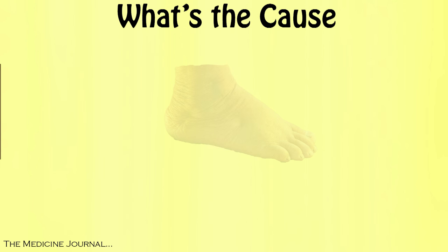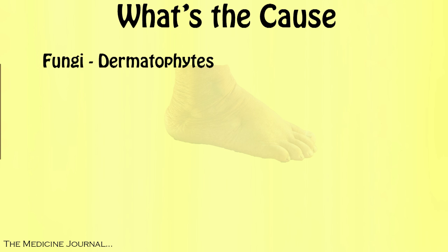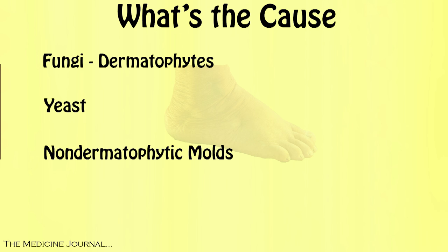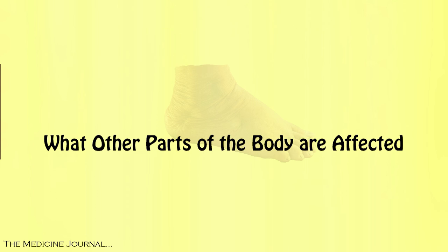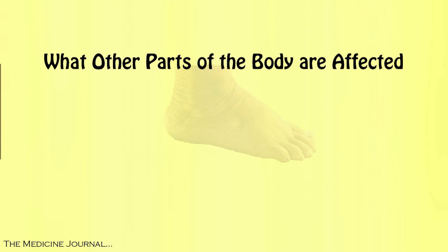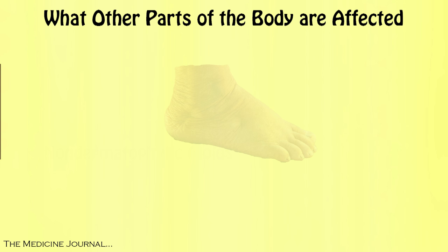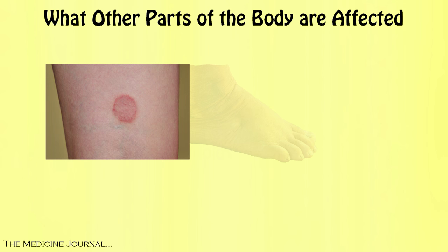There can be several causes of your imperfect nails. The most common is a class of fungi known as dermatophytes. Certain types of yeasts and non-dermatophytic molds are also a frequent cause. Don't think your nails are the only part of your body that can be affected by dermatophytes. When infecting the skin, they cause ringworm or tinea.